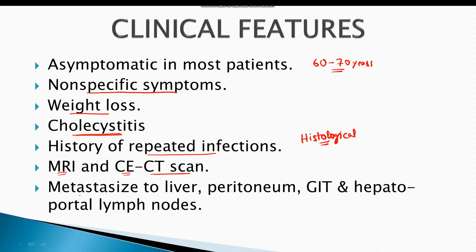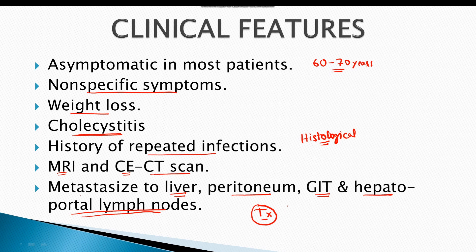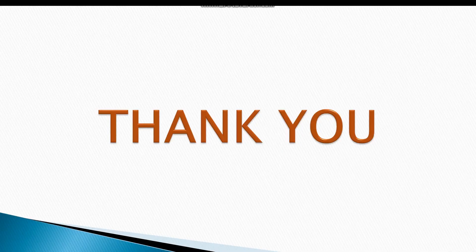These tumors mostly metastasize to the liver, peritoneum, gastrointestinal tract, and hepatoportal lymph nodes. Treatment is surgical removal of the gallbladder along with part of the hepatic tissue, combined with chemotherapy. This concludes the discussion on gallbladder carcinoma.